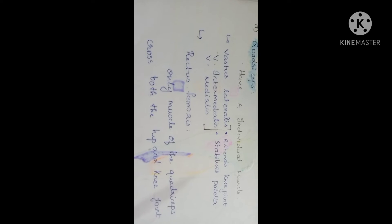The Quadriceps consists of four muscles: Vastus Lateralis, Vastus Intermedius, and Vastus Medialis. The Quadriceps extends the knee joint and stabilizes the patella. Rectus Femoris is the only muscle of the Quadriceps that can cross both the hip joint and knee joint.